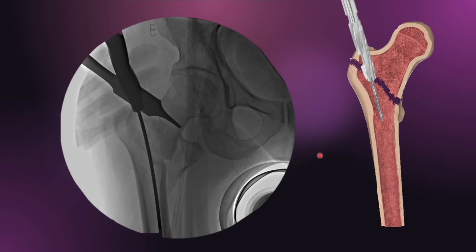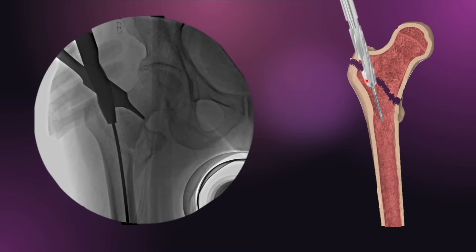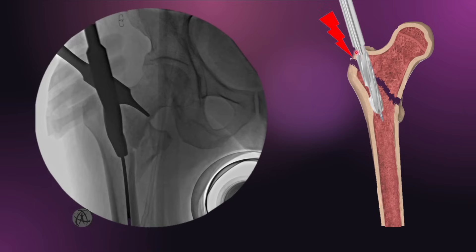The next step is to put the proximal reamer, which creates space for the head part of the proximal femur nail, or cephalomedullary nail. The proximal reamer takes the space as per the guide wire and is directed towards the medullary canal. But the problem occurs when the proximal reamer hits the small, fragile bone which was close to the fracture site and lateral to the tip of the greater trochanter. There are chances that it will break, and the reamer will gain continuity into the fracture site.